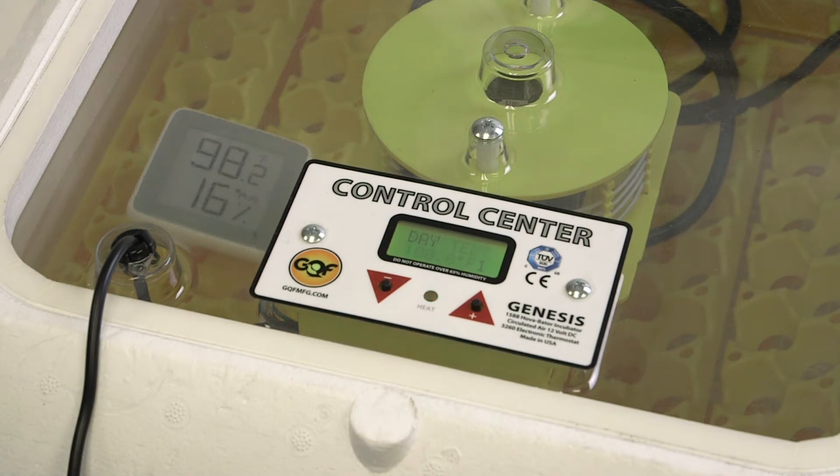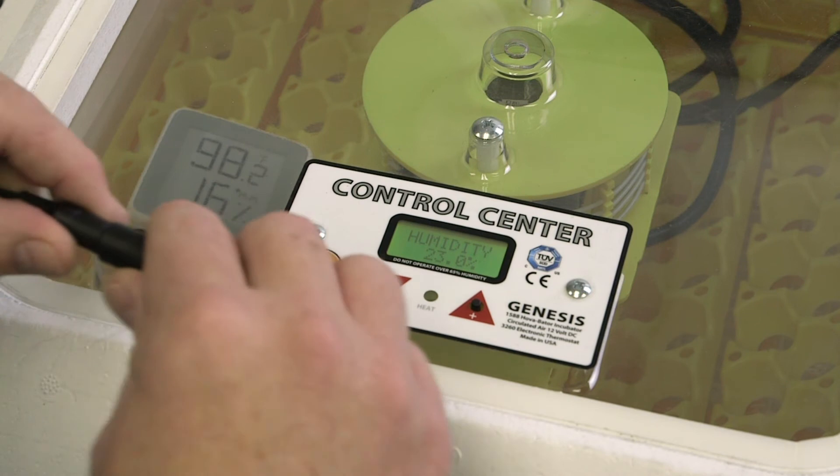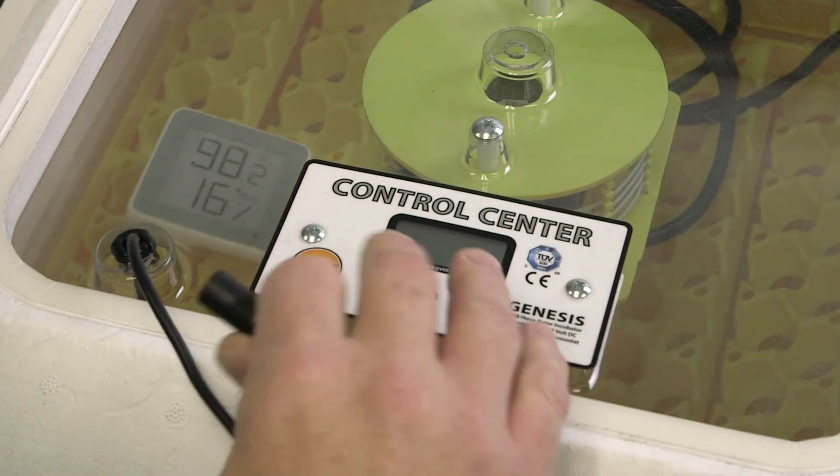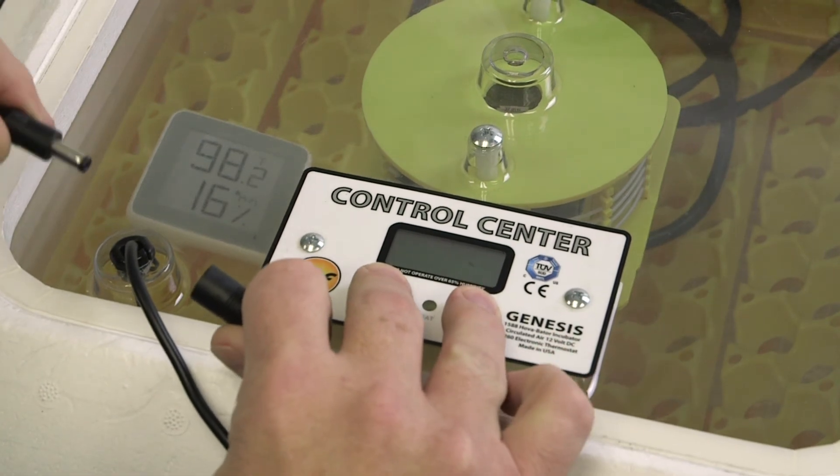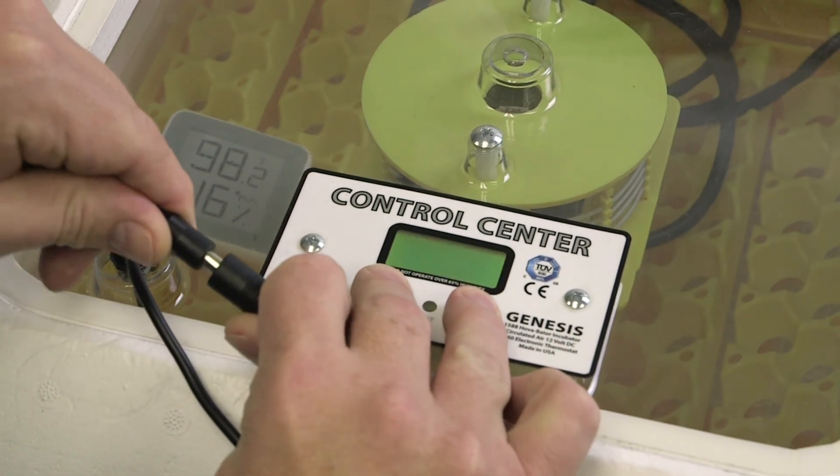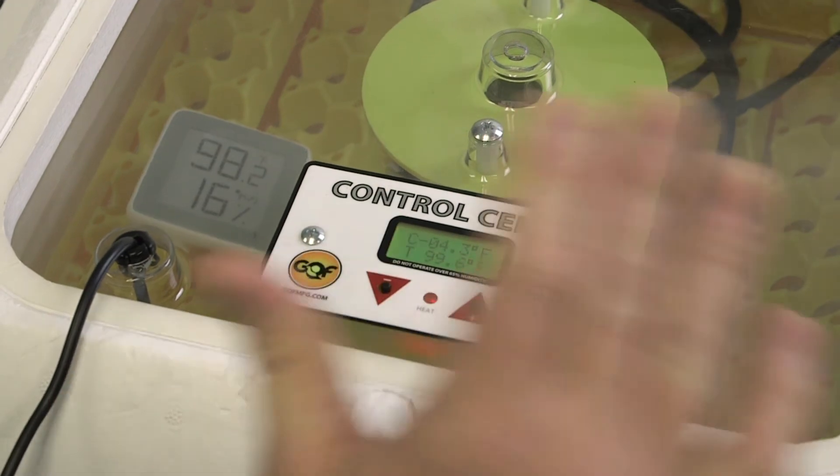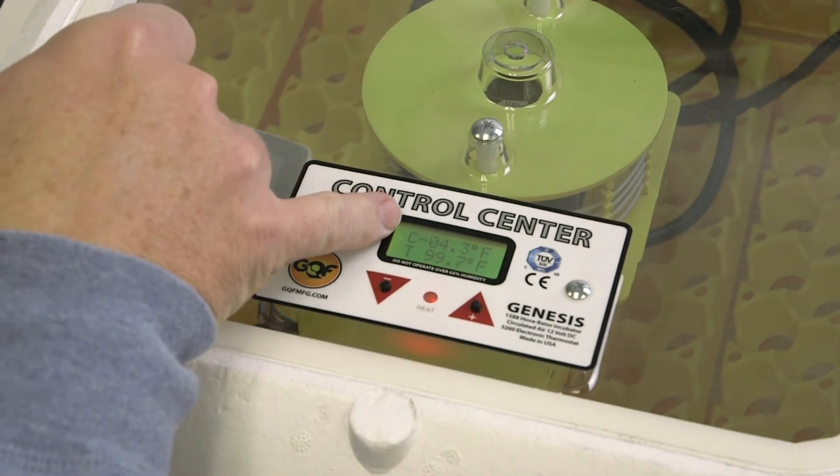You're going to unplug the unit, press and hold both buttons simultaneously while you plug the unit back in. You want to hold these buttons for about four or five seconds, and you'll notice there's a C, that means calibration.